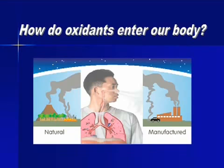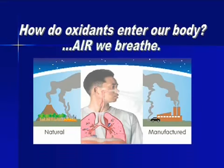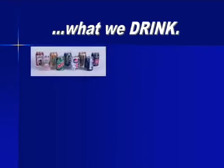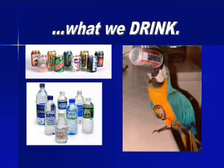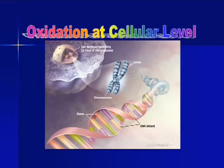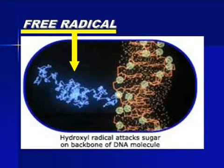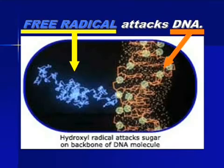How do oxidants enter our body? These free radicals enter our body through the air we breathe. They also enter through the food we eat and through what we drink. This oxidation occurs at the cellular level. Inside the cell is the chromosome, and inside the chromosome is the DNA. When free radicals attack the DNA, the cells are destroyed. Here is a picture of a free radical attacking the DNA molecule.